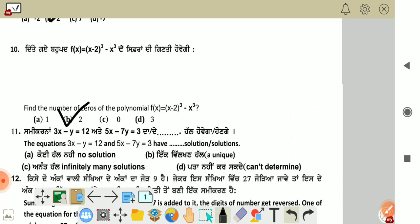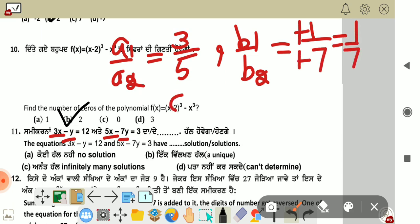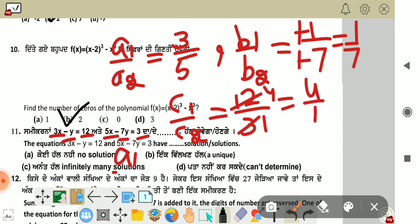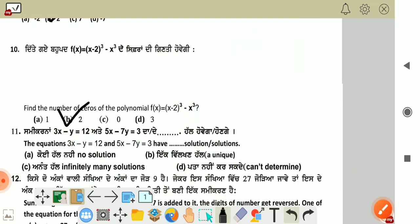Next, find the ratios: a1 by a2 is 3 by 5, b1 by b2 is minus 1 by minus 7, c1 by c2 is 12 by 3 which equals 4 by 1. Since a1 by a2 is not equal to b1 by b2, the system has unique solutions. Answer is B option.